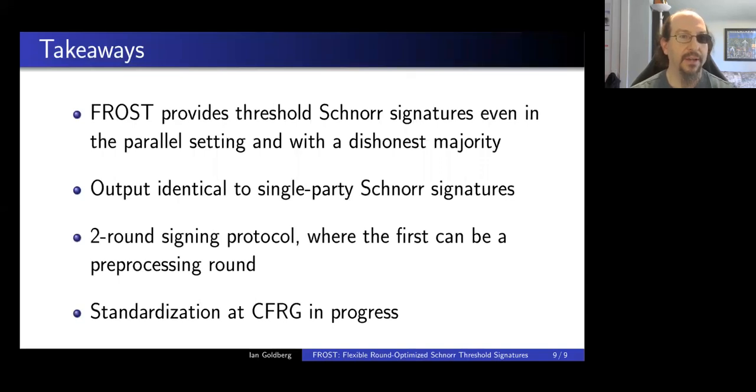Just takeaways to conclude. FROST provides threshold Schnorr signatures, even in the parallel setting, and even with a dishonest majority. The output is identical to standard single-party Schnorr signatures. It's a two-round signing protocol where the first round can be pre-processing. So in real time, there's only one round of communication. And we, along with Deirdre Connolly and Christopher Wood, are currently working on standardizing this protocol at the CFRG. I even caught up on time, so thank you very much.